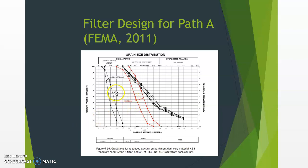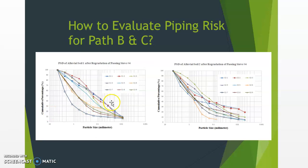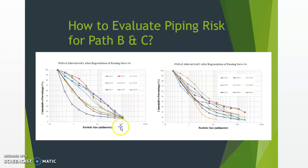It is relatively easy to evaluate the piping risk through the dam structure because the core material has a very narrow range of grain size distribution, making it easy to design the filter media to prevent internal erosion. However, estimating the piping risk for the alluvial soil underneath the dam structure is more challenging because alluvial soil shows a wide variety of grain size distributions with no clear trend in grain size distribution or relative density.